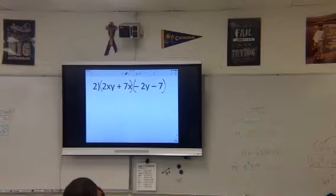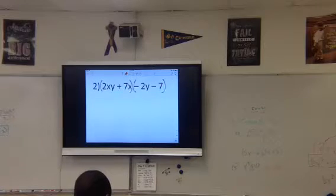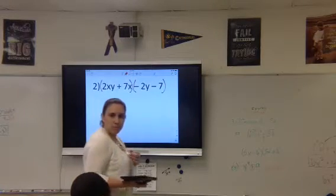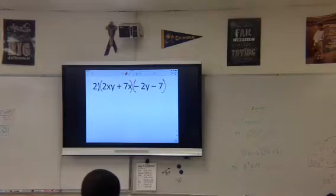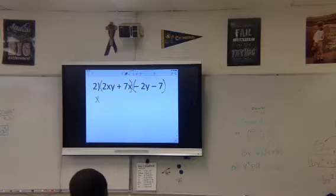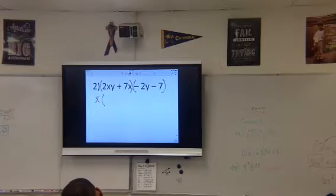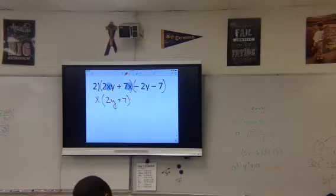First grouping. What can we pull out of the first grouping here? What's your GCF? X. Good, Marcella. That's right. So we're going to pull out an X because they both have an X in common. That's what they have in common. And we're going to have a 2y left and a 7 left.